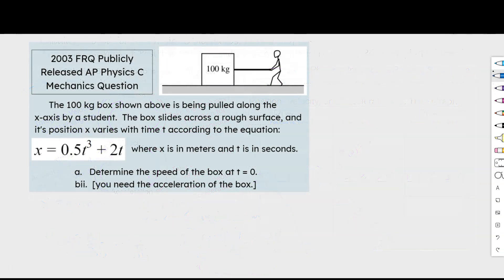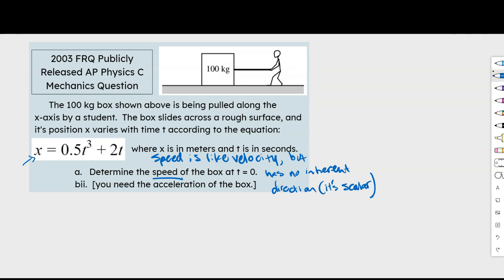All right. And let's take a look at this FRQ right here. This is just part of an FRQ, but it's good to start getting used to format and start thinking about how to approach these kinds of problems. So it says the 100 kilogram box shown above is being pulled along the x-axis by a student. The box slides across the rough surface and its position x varies with time according to the equation given, where x is in meters and t is in seconds. Determine the speed of the box at time equals zero. Okay, so the question is about speed. We have our position. Okay, so speed is like velocity, but it has no inherent direction. It's scalar, so there's more information about that. We'll get into that later in the course. But for now, let's just say let's solve for velocity and then that will be our answer basically.